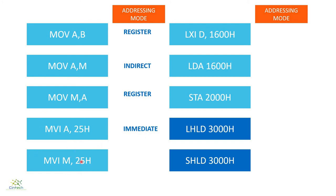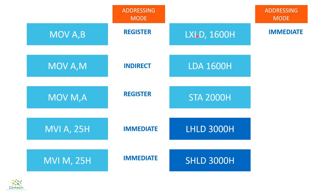Similarly, LXI is a different instruction from MVI, but before knowing anything else, you already know it will have immediate mode of addressing because you can find an 'I' in it. What it does is simply write the value 1600H into the register pair DE. So the data is already in the instruction itself — this is going to be immediate addressing mode.